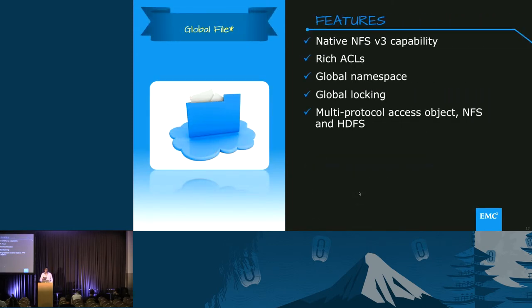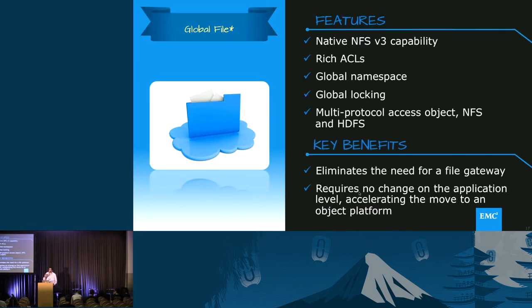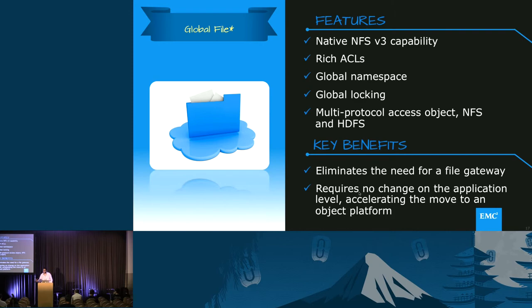We also have the concept of global file — not just file, but the ability to have file across multiple locations. Imagine you have four or five locations and you want to export an NFS export, access that data from any location, and have global locks. When you open a file in one location, there's a lock in the other. If you change ACLs, it's reflected. This eliminates the need for a separate file gateway — you can just use ECS and get file gateway capabilities out of the box.